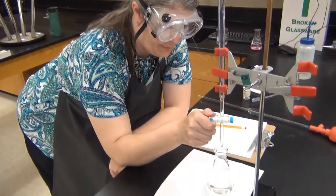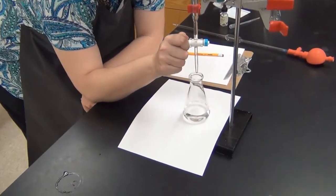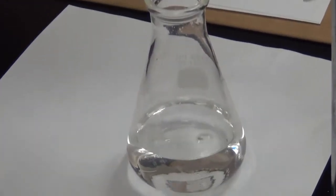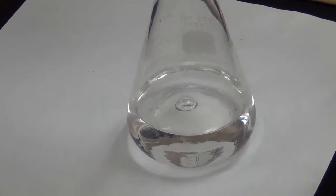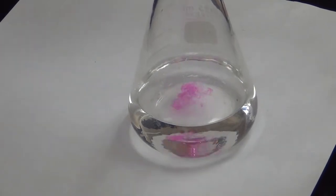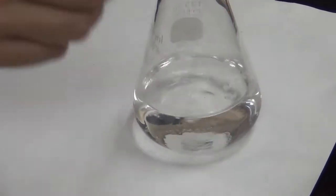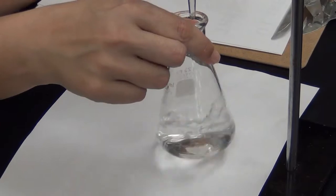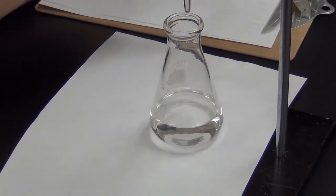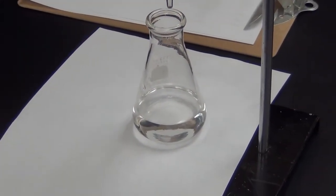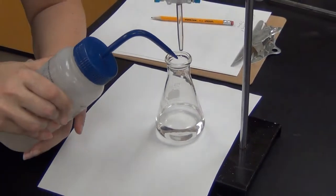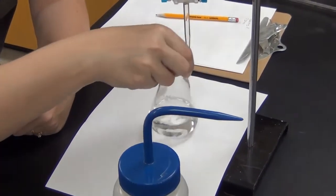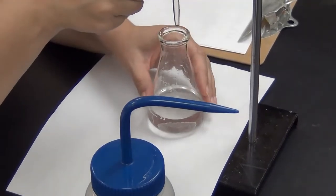Getting close to where I expect this might be, and you can see I'm adding small amounts and swirling, and the color change is starting to be fairly persistent. So I know I'm getting close to the end point, and I need to add small amounts at a time until I get that persistent light pink color again. And I want to be looking and watching for any droplets like that that are going down the glass, and I want to make sure I wash them into the solution so that that base gets in and reacts instead of being stuck to the glass.